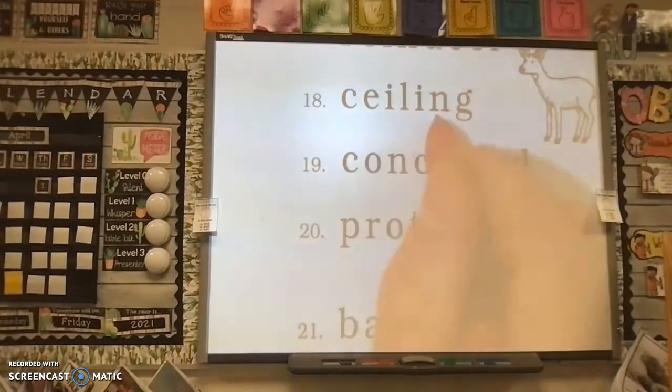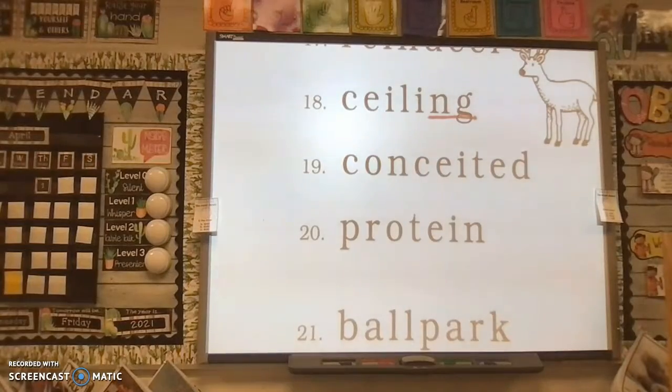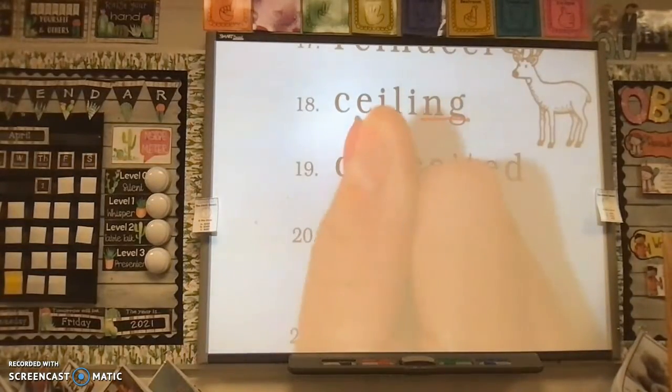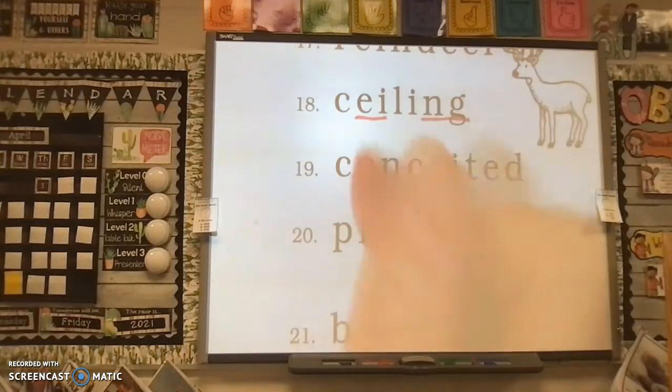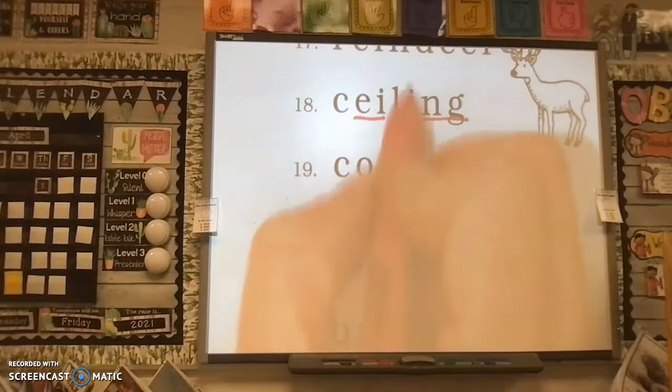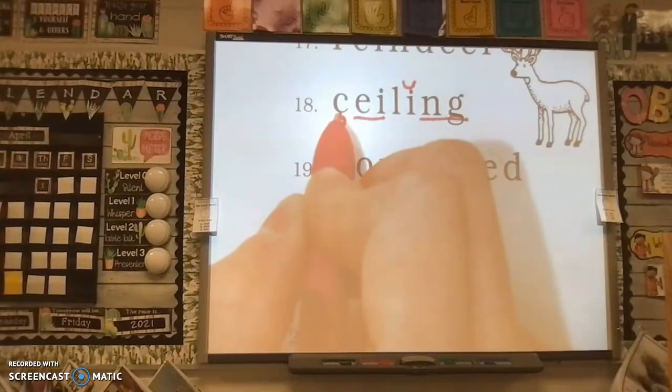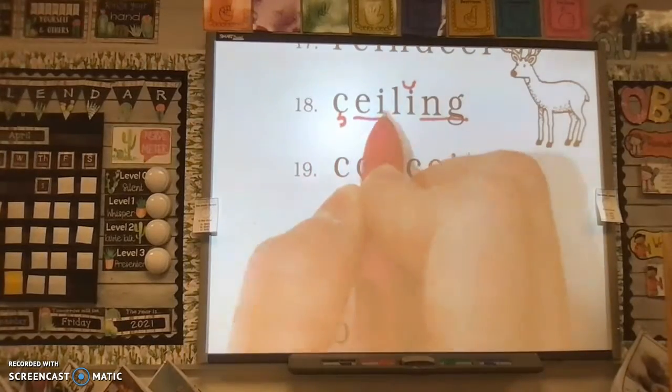Number 18. Yes, it has a digraph NG in it. What else do you see? Yes, I see digraph E-I, and do we know if it's making the short E or the long E sound? Well, we don't know, so let's finish coding it.